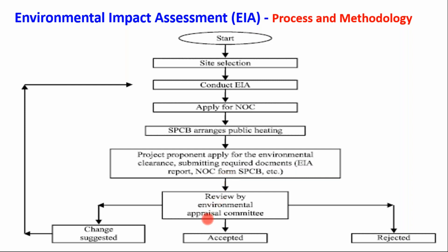There is then a review by the Environmental Appraisal Committee (EAC). If all things are positive, the proposal is accepted by the State Pollution Control Board or Central Pollution Control Board representatives and Environmental Clearance is granted. If they suggest modifications, corrections, or rectification in processes, operations, or layout, all these changes must be made as per their specifications and EAC suggestions.